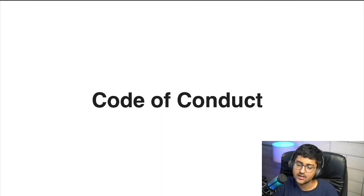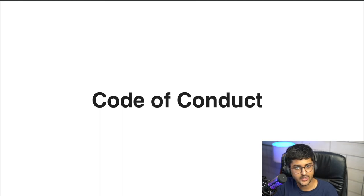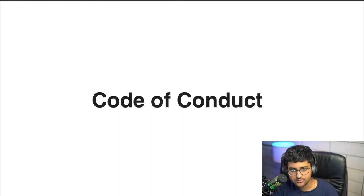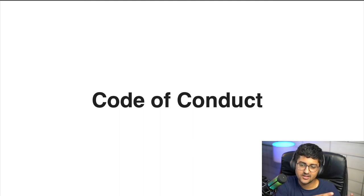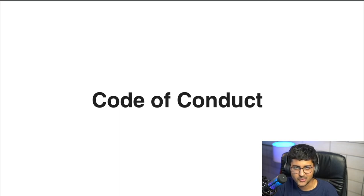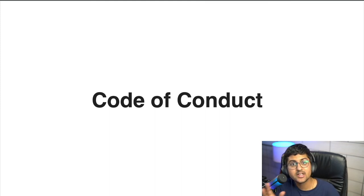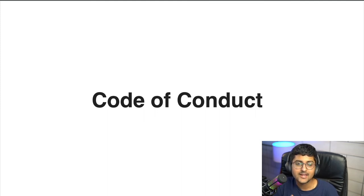Code of conduct — everyone is aware of what codes of conduct are. Basically it's a set of rules and regulations for the community: be polite, no spamming, no promotions, and no bad talk. It also applies to us as human beings — be kind, don't make negative comments based on race, gender, or other characteristics. Don't discriminate. These are basic human ethics everyone should follow.